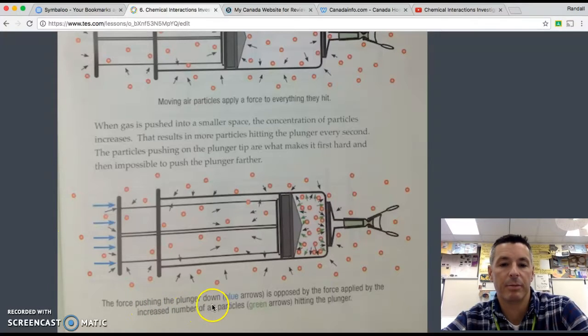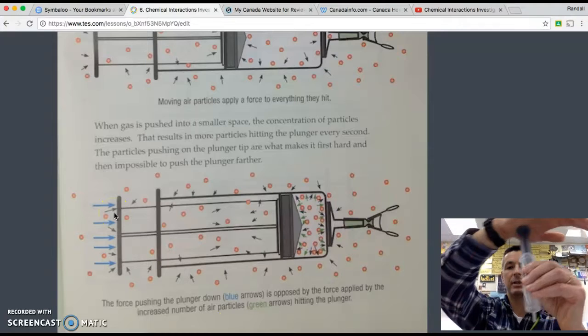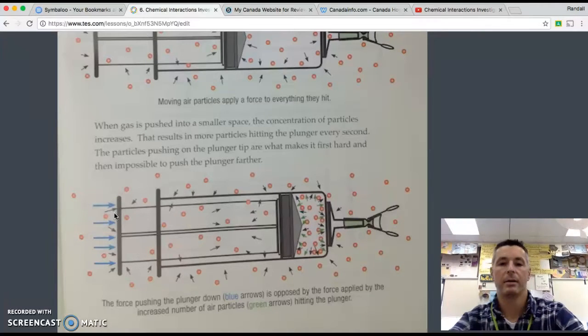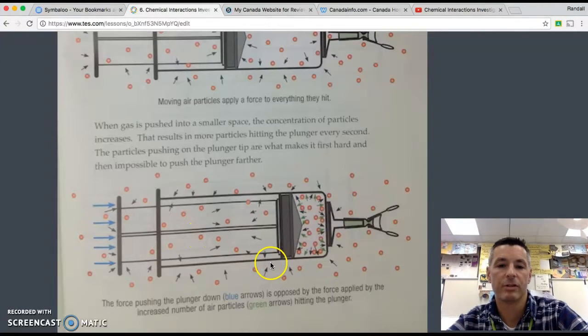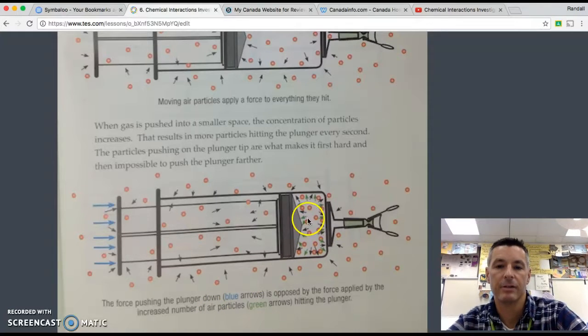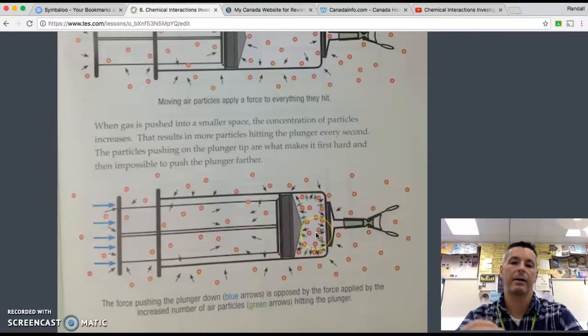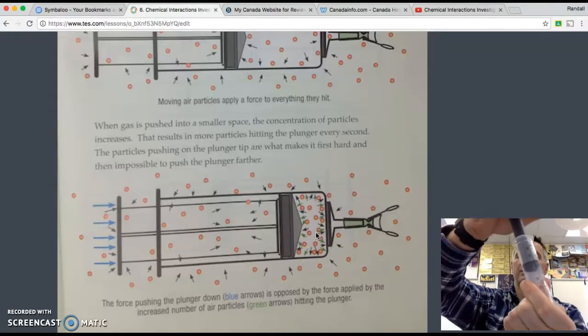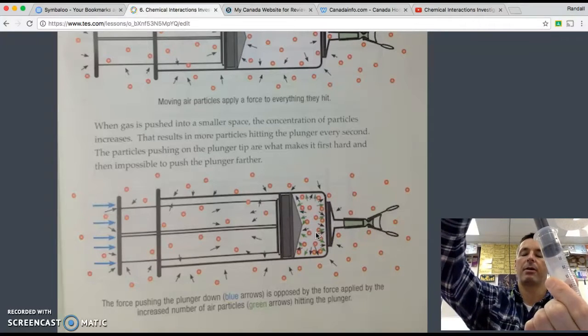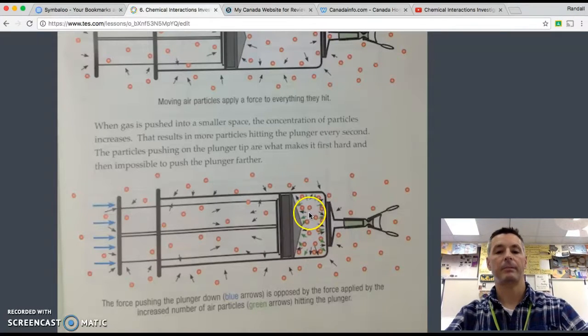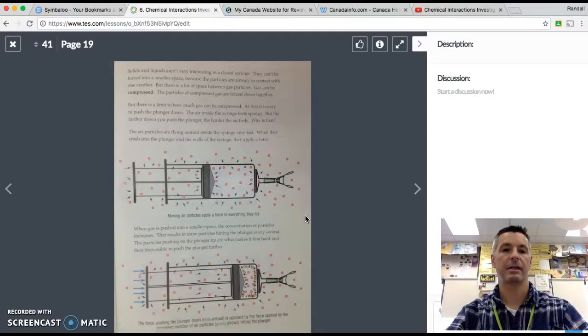When gas is pushed into a smaller space, the concentration of particles increases. That results in more particles hitting the plunger every second. The particles pushing on the plunger tip are what makes it first hard and then impossible to push the plunger farther. The force pushing the plunger down, which is the blue arrow, that would be me pushing the plunger down, is opposed to the force applied by the increased number of air particles, green. So these particles push back. So force down and it's pushed back by the air particles.